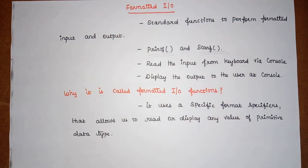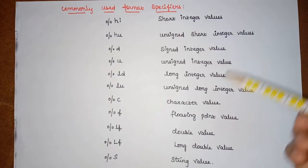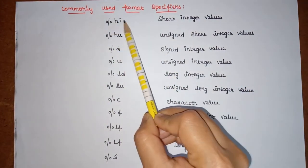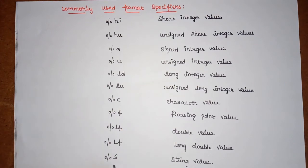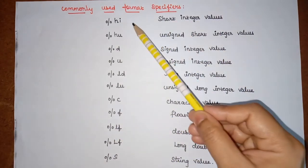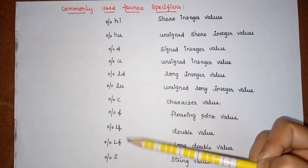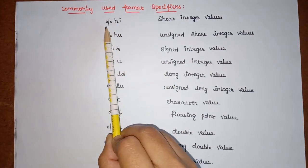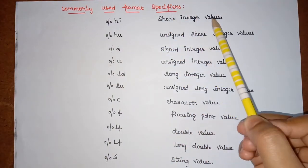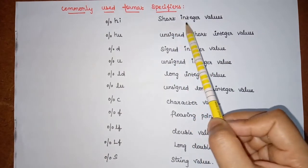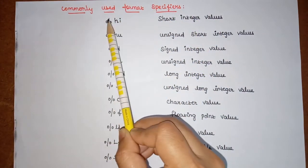The commonly used format specifiers are: %hi, %hu, %d, %u, %ld, %lu, %c, %f, %lf, %Lf, and %s. These are the format specifiers used in printf and scanf statements. The format specifier %hi is used for short integer values — when we want to print or read any short integer value, we use %hi.